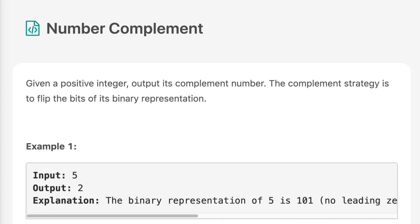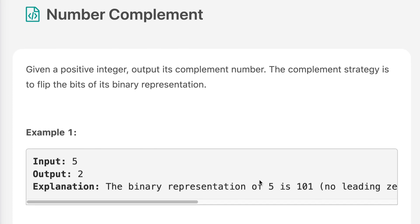The question says: given a positive integer, output its complement number. The complement strategy is to flip the bits of its binary representation. For example, we are given 5 and the binary representation of 5 is 1 0 1. We complement it, so it becomes 0 1 0.